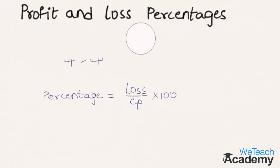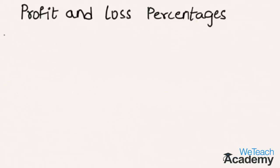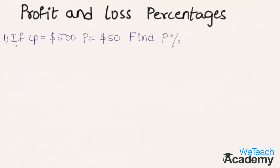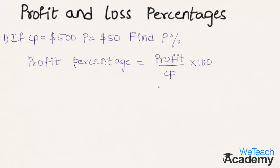Let us solve an example. If cost price is $500 and the profit is $50, we have to find the profit percentage. The formula is profit divided by cost price multiplied by 100. Substituting, we get $50 divided by $500, multiplied by 100.